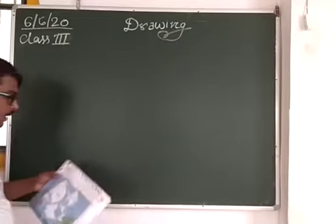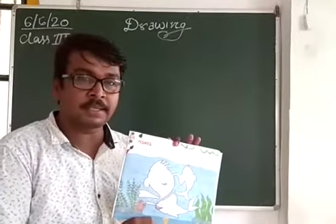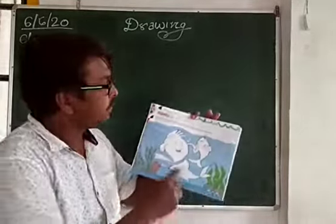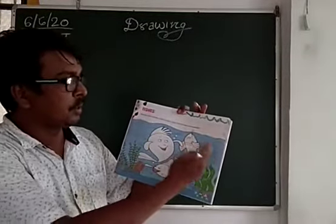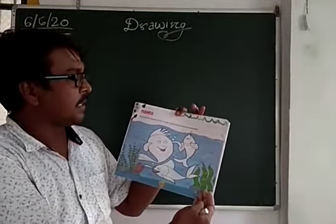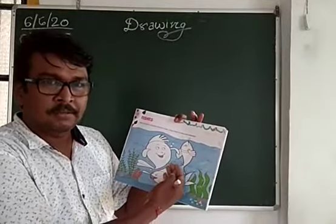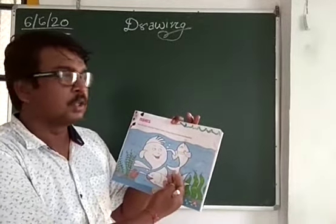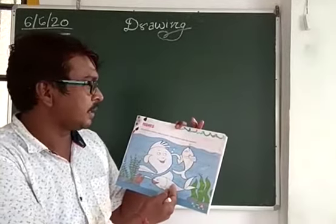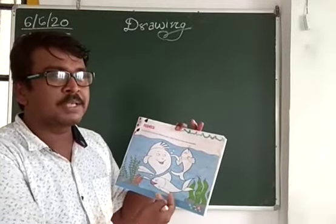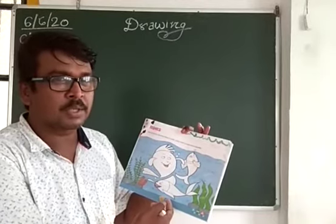The first thing is that the page number is 5. This page is called Aquatic Animals — aquatic plants, animals, feces, okay? These are all aquatic animals. Aquatic means aqua, water — aqua means water.